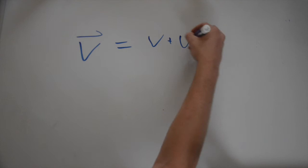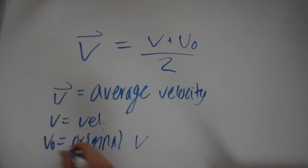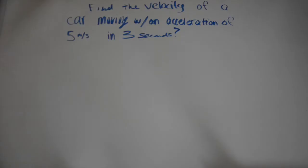The fourth and final formula is for average velocity, which is (V plus V₀) over 2. V equals velocity, V₀ equals the original velocity.